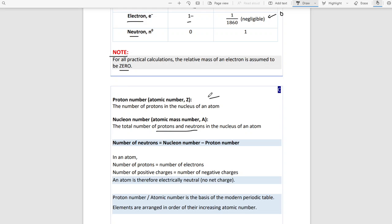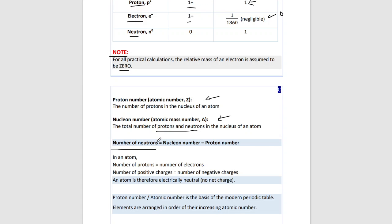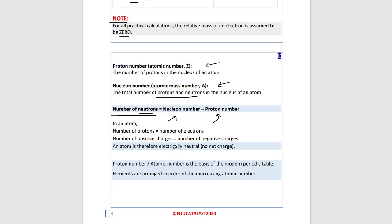Usually you find the atomic number and the mass number in the periodic table. To calculate the number of neutrons, you do nuclear number minus the proton number. In an atom, the number of protons equals the number of electrons, and the number of positive charges equals the number of negative charges — therefore the atom has no net charge, because it's neutral.